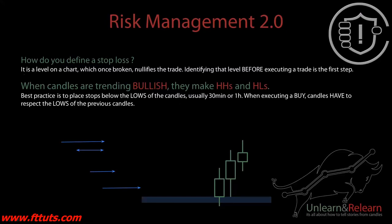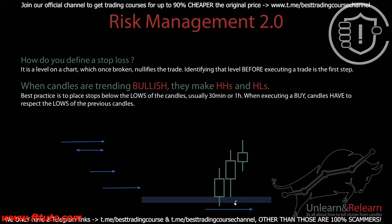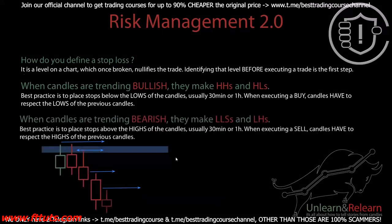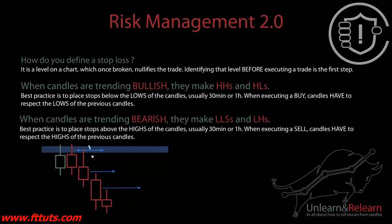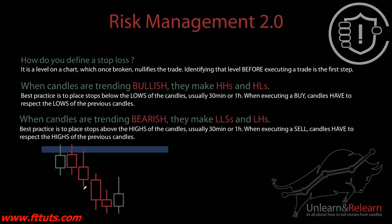Some traders take a buy, place their stop below, and then don't move it as price moves into profits. What can happen is the next candle comes back down, passes the original stop, and stops you out at a loss. This is why risk management is so important — continuously moving your stop below the lows of candles in uptrends, and above the highs in downtrends, so that if a reversal candle hits your stop, you're stopped out in profits.